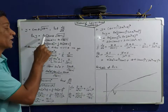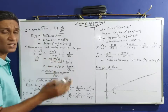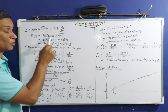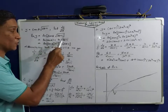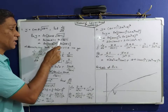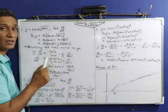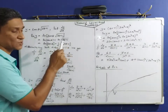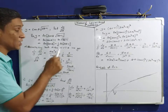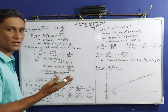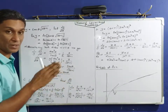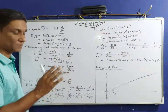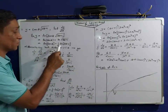Taking ln on both sides: ln y = ln(tan θ · √(2θ + 1)). Applying logarithm properties, this becomes ln(tan θ) plus ln of (2θ + 1) raised to 1/2. So applying the power rule, we get ln(tan θ) + (1/2)ln(2θ + 1).